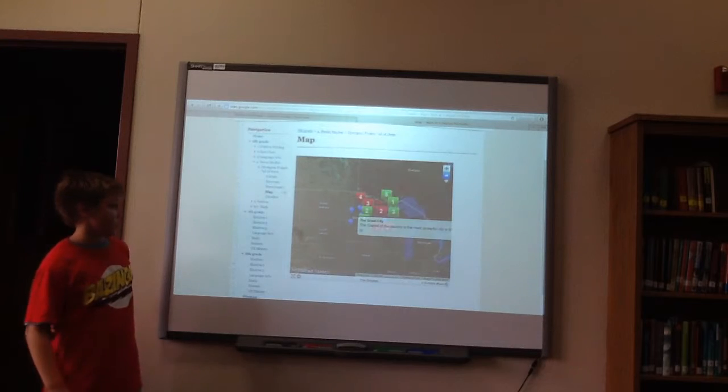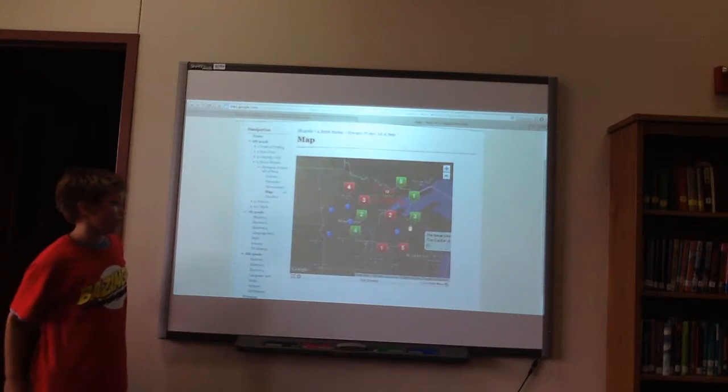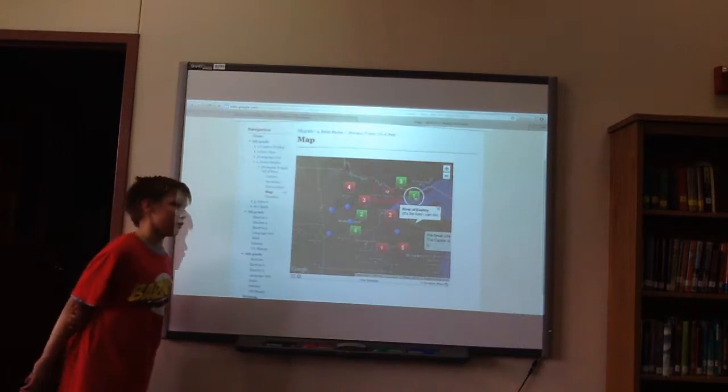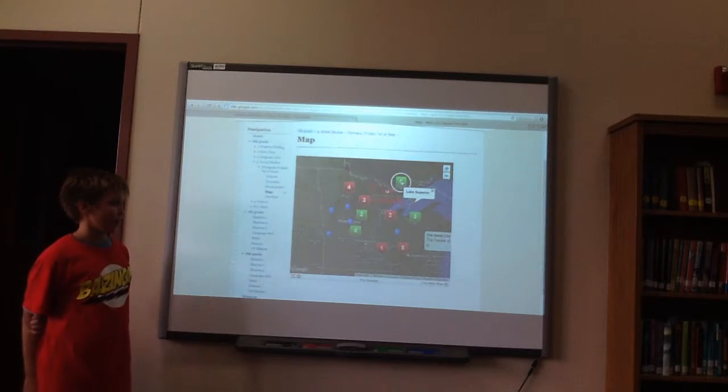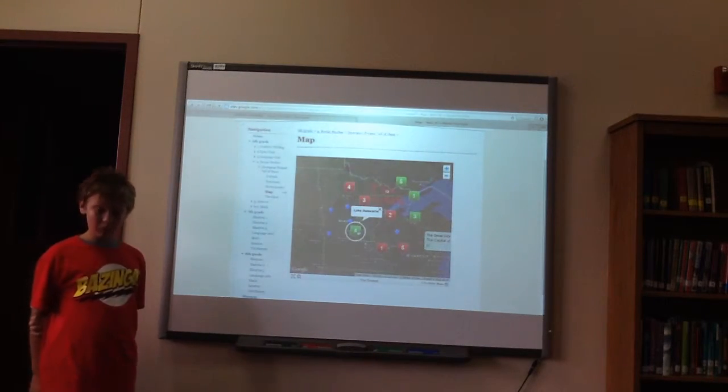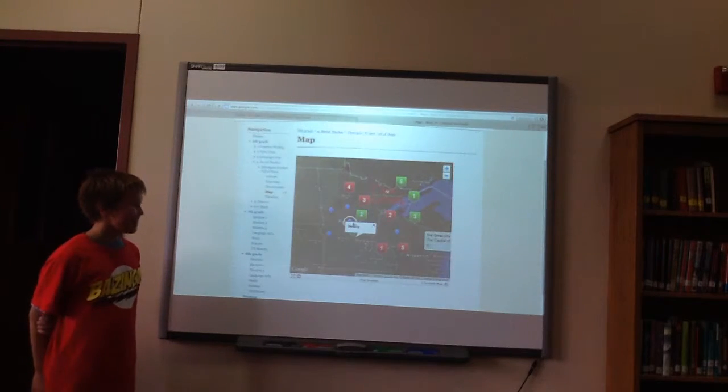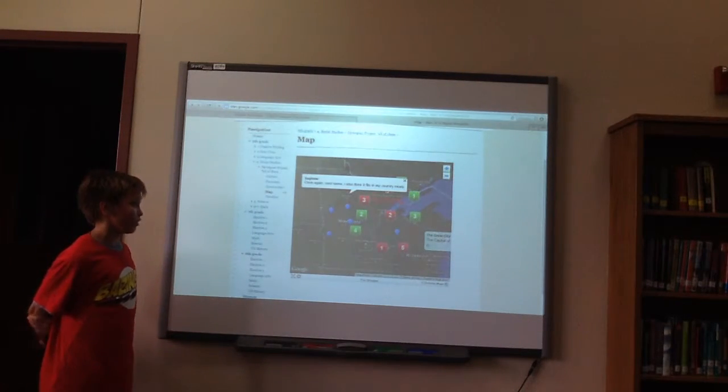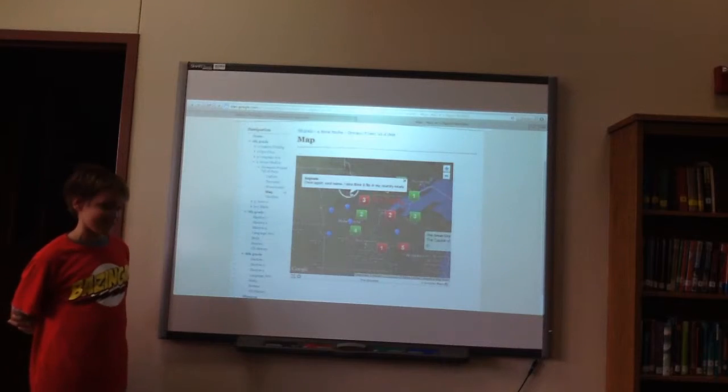If you click on the green ones, the green ones are my water features. I have rivers, lakes, tributaries, more lakes than this one. And for the red are cities, my cities.